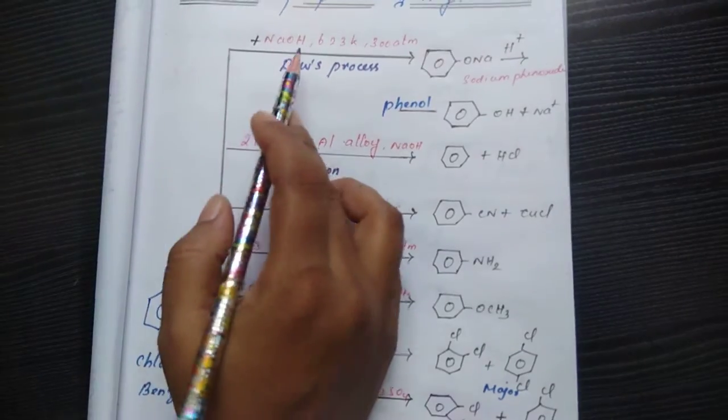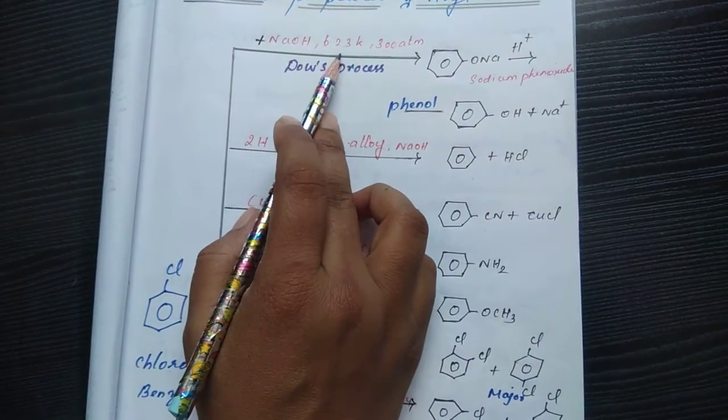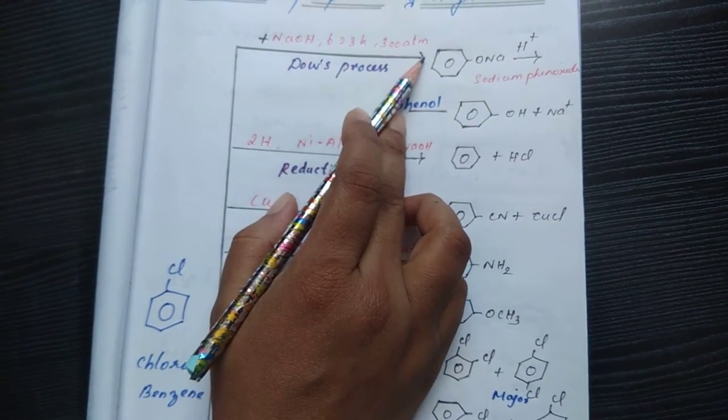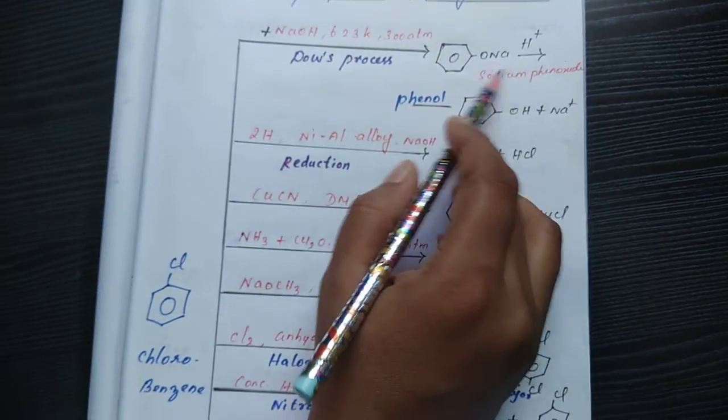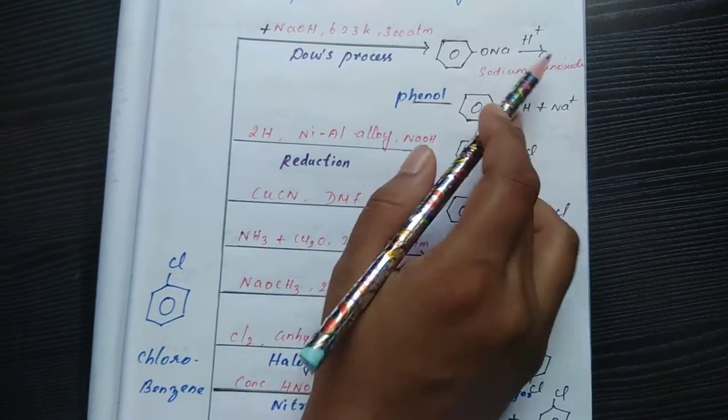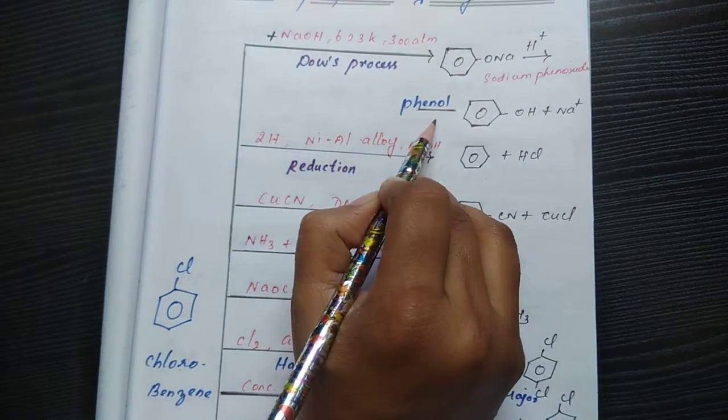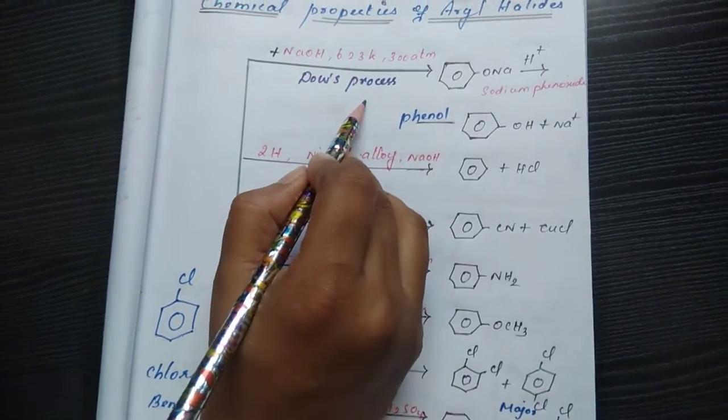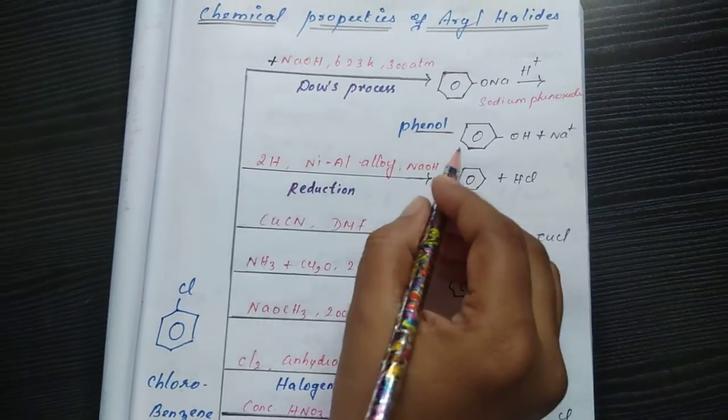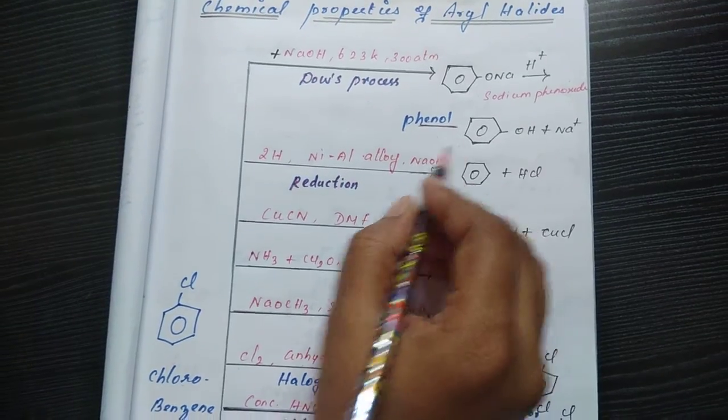This will undergo reaction with sodium hydroxide at 623 Kelvin, 300 atmospheric pressure. We get sodium phenoxide as an intermediate, followed by acidic medium it converts into phenol. So this is a Dow's process, very famous for the preparation of phenol.